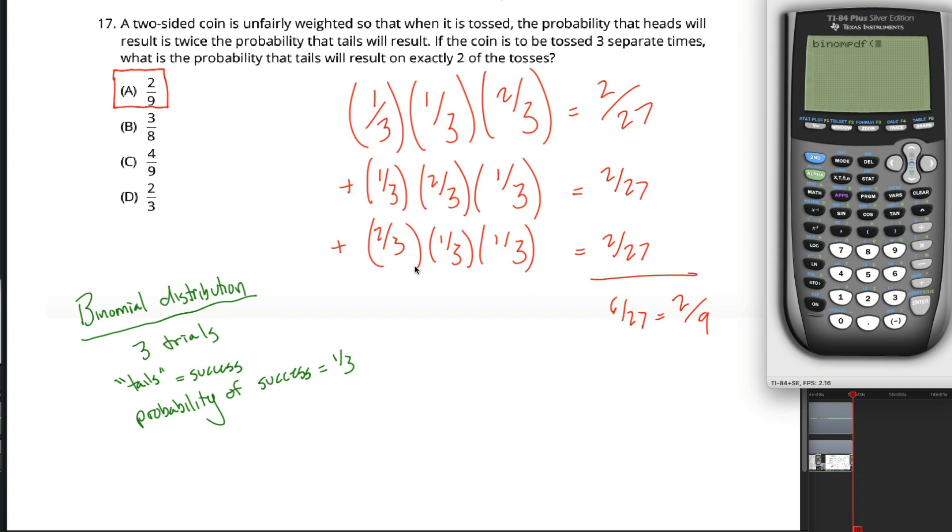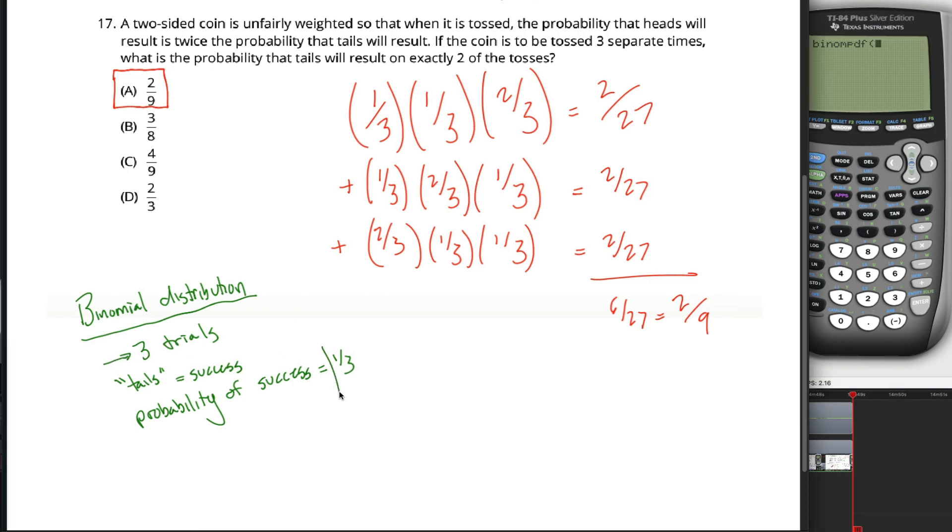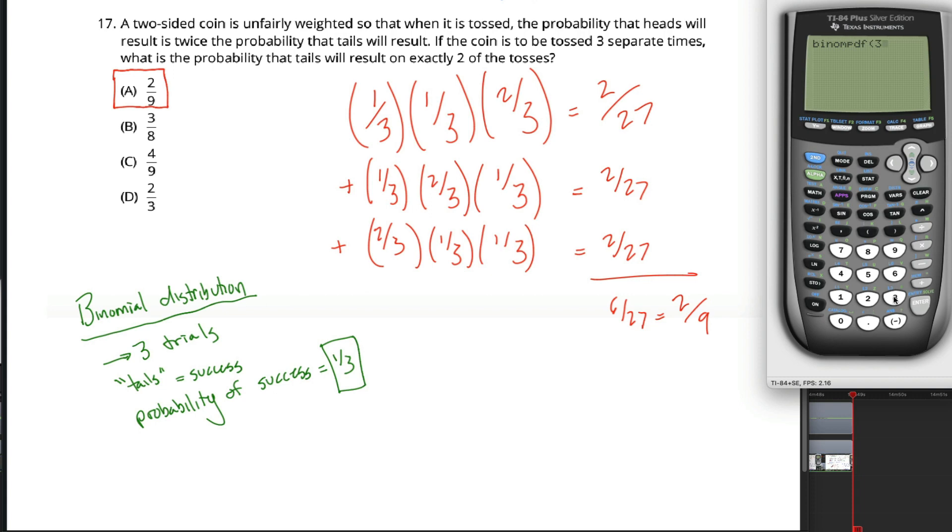When you use binomial PDF, there's three things you need to tell your calculator. If you have the user-friendly software in here, it might ask you for those three things. But if you don't, like me, you need to know what it's waiting for. The first two things it's waiting for are the parameters in the binomial distribution, the number of trials that you have, and the probability of success. So I'm going to use binomial PDF, and I'm going to put in a three first to represent the fact that I'm tossing this coin three times, and then a one-third second to represent the probability of a success, which I'm calling tails, to be one-third. My third and final argument into the binomial PDF function is the number of successes that I want. I want to know the probability that there's exactly two tails, exactly two successes. So I put a two in this third spot and hit enter.